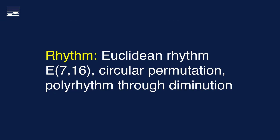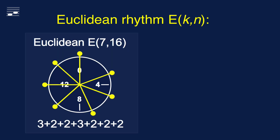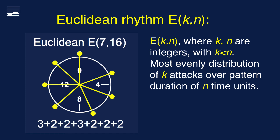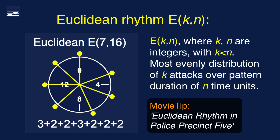The next aspect is the rhythm. I decided to use an Euclidean rhythm pattern, from which I selected two circular permutations and a polyrhythm created through a combination with a rhythmic diminution. Here's a graphic representation of the Euclidean rhythm E7-16, the most evenly distributed distribution of seven note attacks over a pattern with total duration of 16 time units. This yields the rhythm pattern 3 plus 2 plus 2 plus 3 plus 2 plus 2 plus 2 time units.